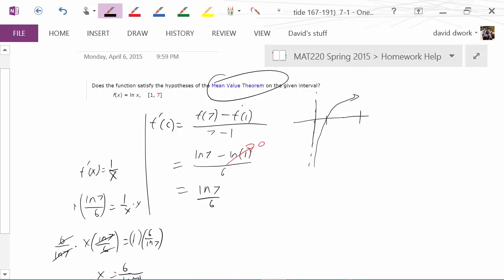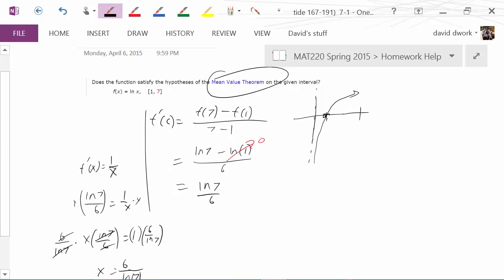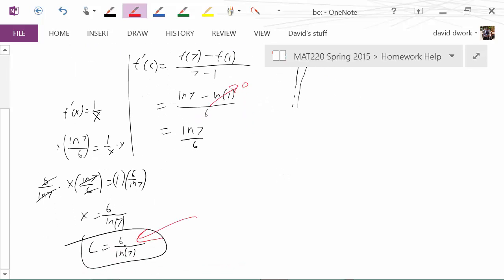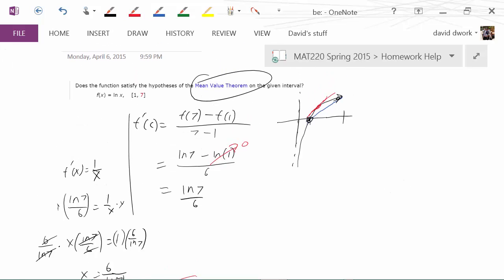And the mean value theorem says, one more time, that mean, average, average rate of change, a.k.a. slope, right? The slope is equal to the derivative at some value. So meaning the average rate of change from point A to point B, there must be a tangent line somewhere along the way that would be kind of parallel. That wasn't very good, but you get the idea, I think. Parallel to the blue line. There was at some point, and we know that point is at the value of six divided by natural log of seven.